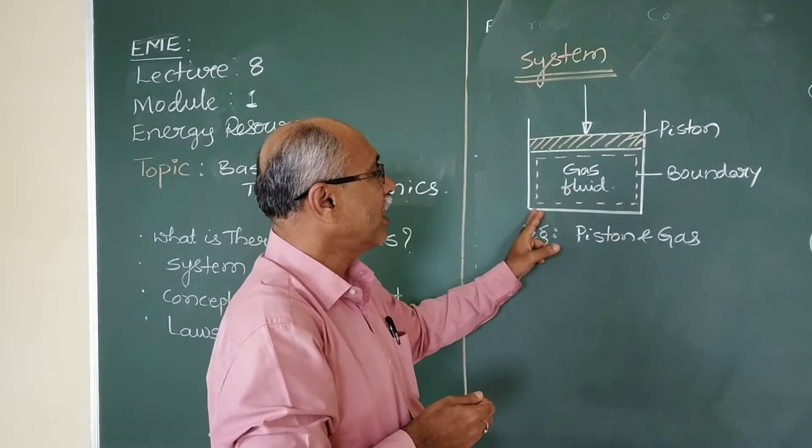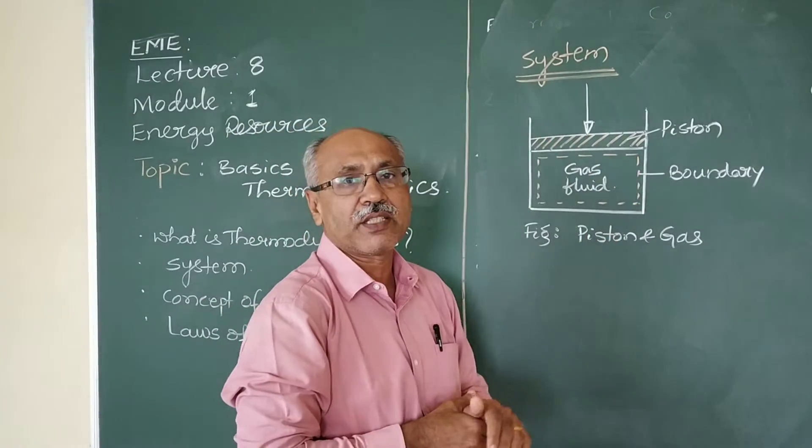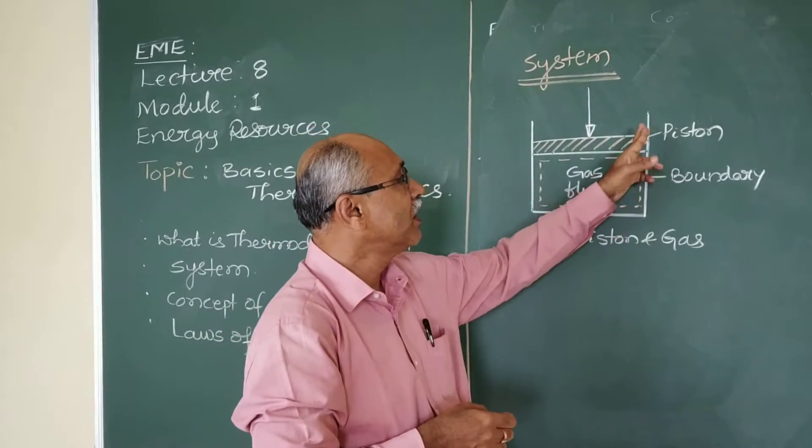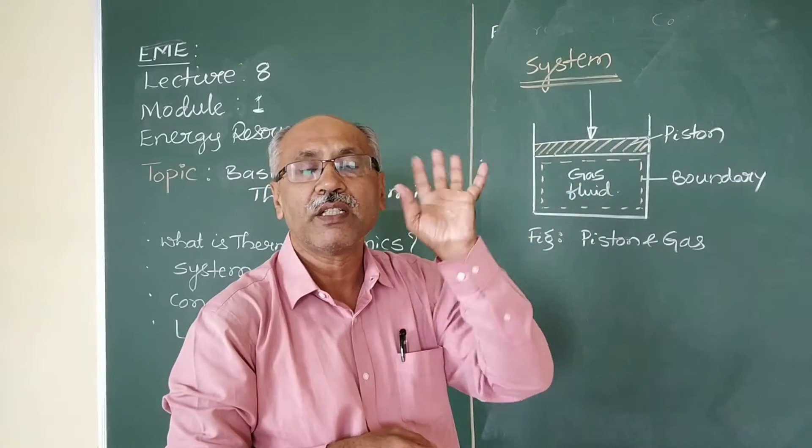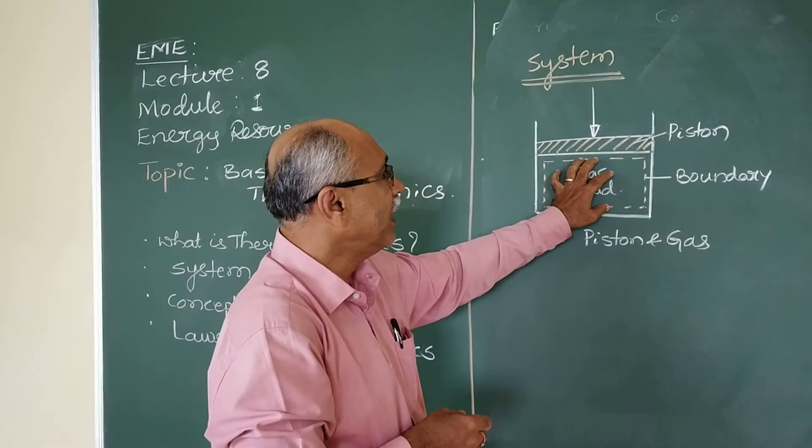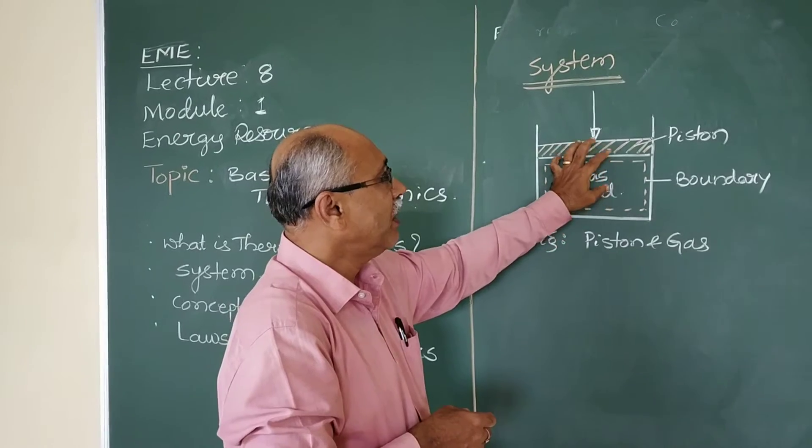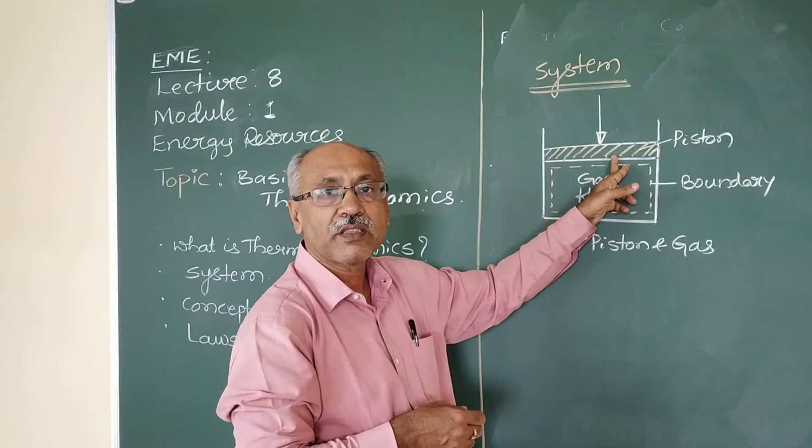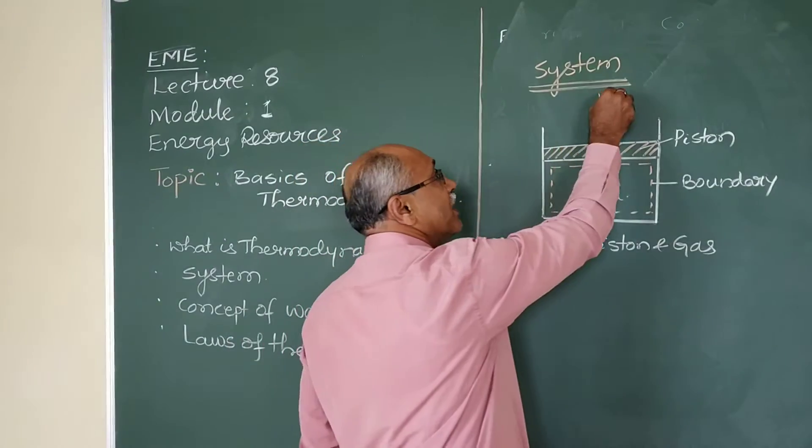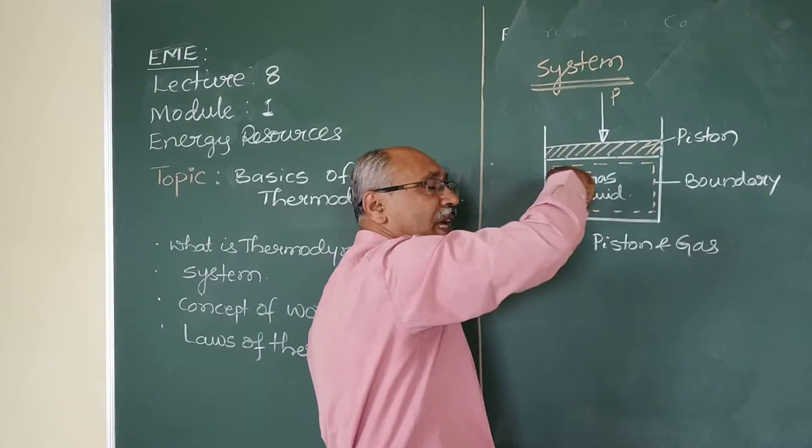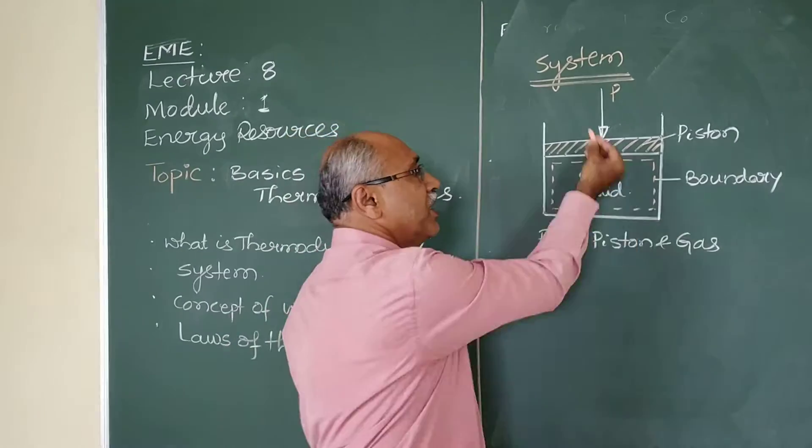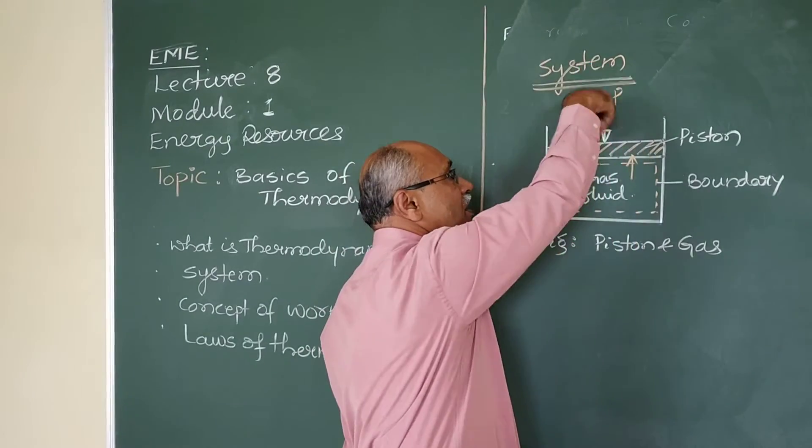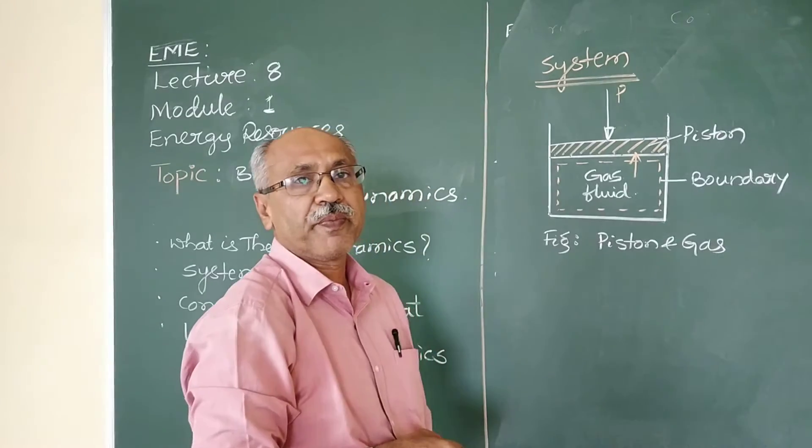For example, consider an arrangement of piston and gas. A closed cylinder, in which some quantity of fluid, that is gas, is contained. And it is fitted with a piston. The pressure is exerting from the piston over the gas fluid against the pressure of the fluid. This is the force of the piston that is balanced.